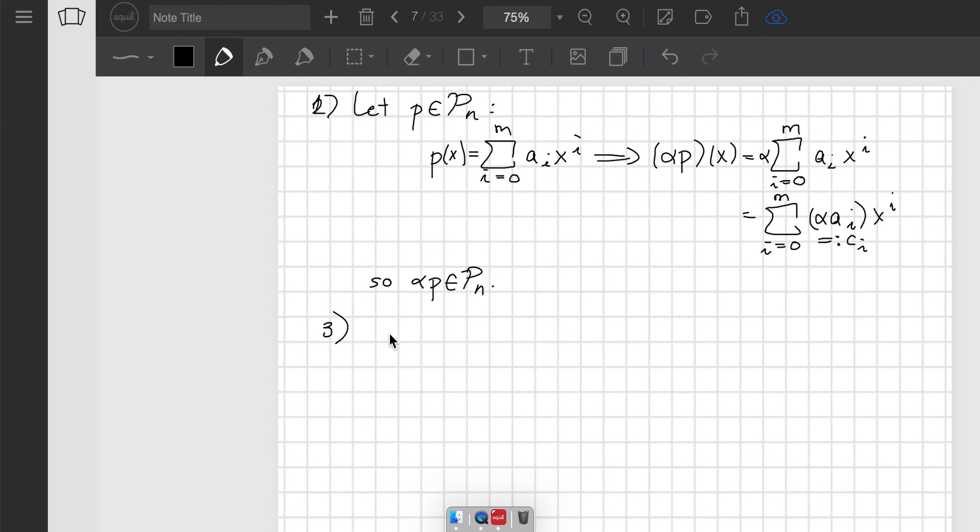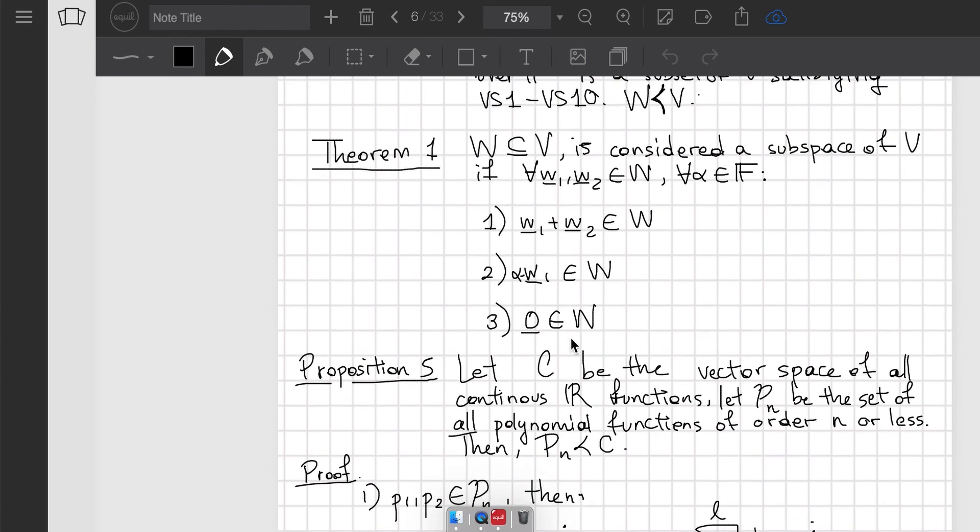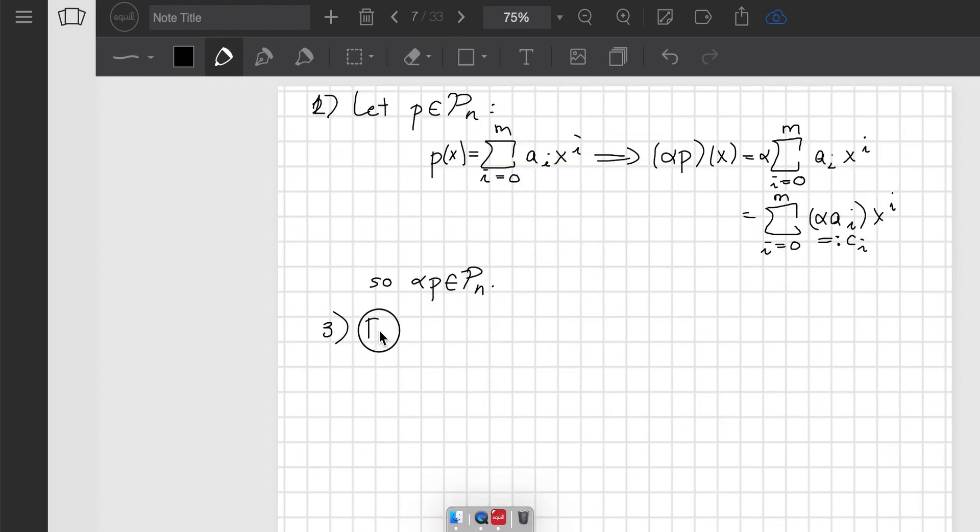Finally, the last thing is we have to prove that the zero vector of the vector space belongs to P_n. In this case, the zero vector is just the zero function—that's a polynomial where all the coefficients are zero. Does zero belong to P_n? Of course it does, because zero is a polynomial of order zero, and zero is less than n provided n is a natural number.